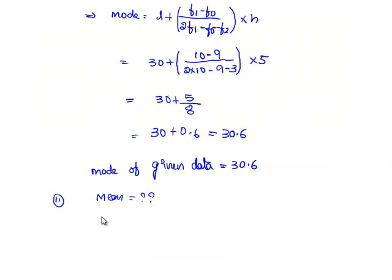We shall adopt step deviation method for doing this. As we know in the step deviation method, the relation for mean is x bar equals a plus h into u bar, where a is the assumed mean. As we know, h is the class size, that is 5.